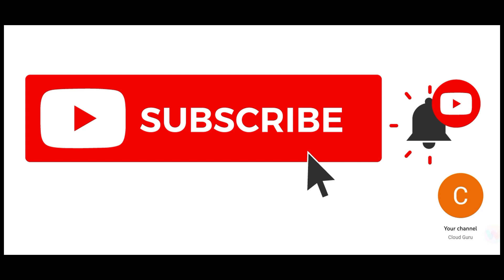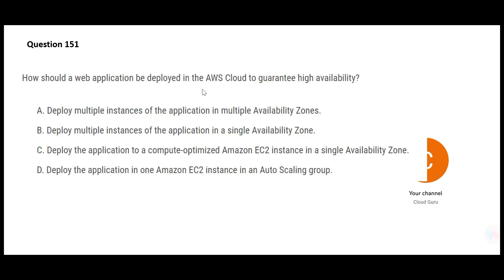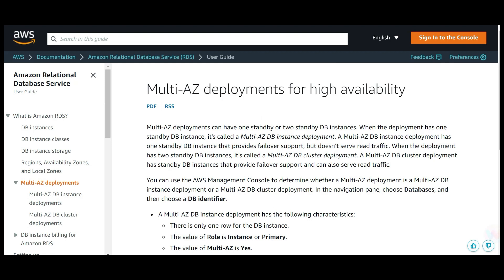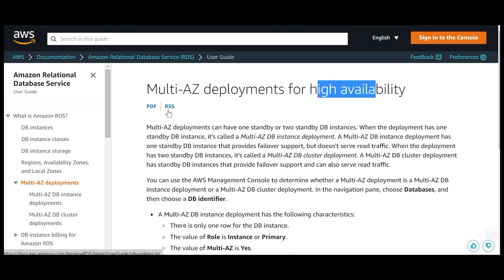Let's jump into the questions. The first one asks: how should you deploy your applications so that high availability is guaranteed? The first option says deploy it on multiple AZs, which is perfect — you are deploying multiple instances on multiple AZs. Take the example of a multi-AZ deployment of a database. It increases your availability because if one AZ goes down, the other AZ is still there.